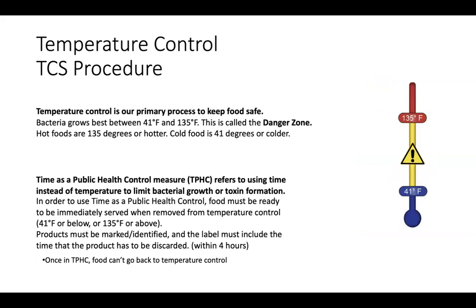TCS procedure. Temperature control is our primary process to keep food safe. Bacteria grows best between 41 and 135 degrees — this is called the danger zone. Hot foods are held at 135 degrees or hotter. Cold foods are held at 41 degrees or colder. Time as a public health control measure refers to using time instead of temperature to limit bacterial growth or toxin formation. In order to use time as a control, food must be ready to be immediately served or removed from temperature control. Products must be marked and identified, and the label must include the time that the product has to be discarded, which is within 4 hours. Once time as a control is used, it cannot go back into temperature control.